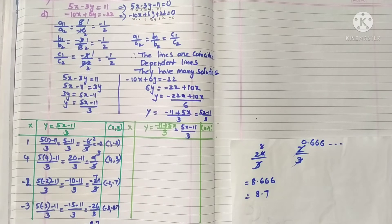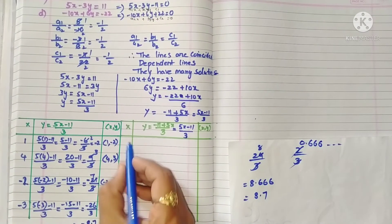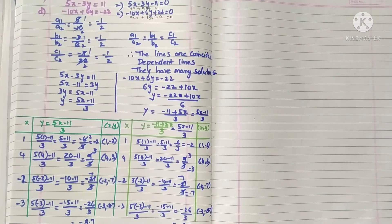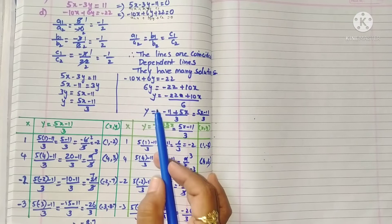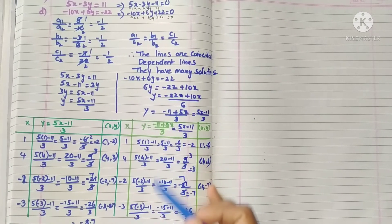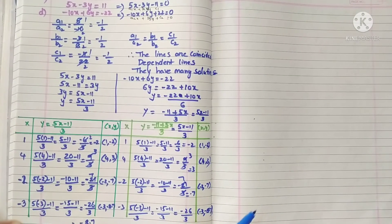Same points here. The line is the same, so same points we can write here. If you take minus 22 plus 10x by 6, the same points will come if the values are common.